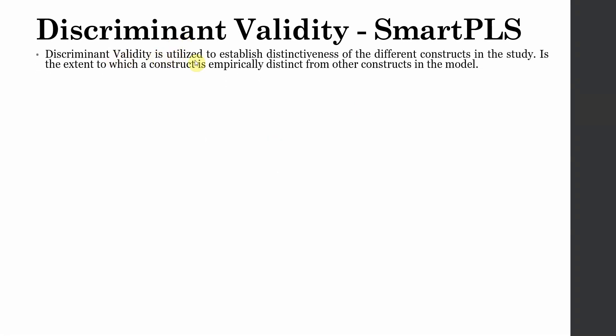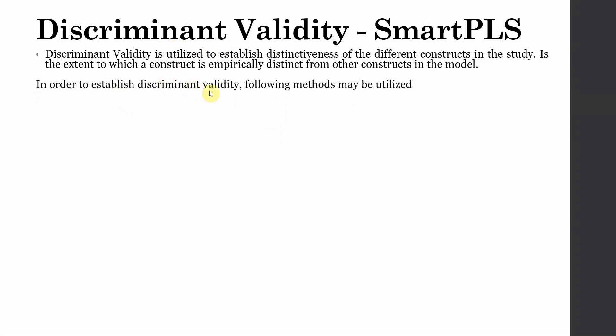Discriminant validity in SmartPLS 4 is utilized to establish the distinctiveness of the different constructs in the study. It is the extent to which a construct is empirically distinct from the other constructs — the empirical establishment of how different one construct is from another. Because in social sciences research different concepts may overlap, it is very important that you establish discriminant validity.